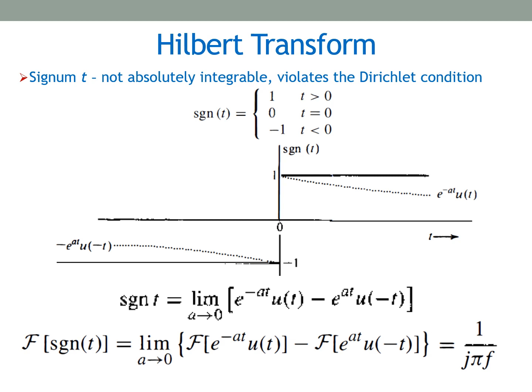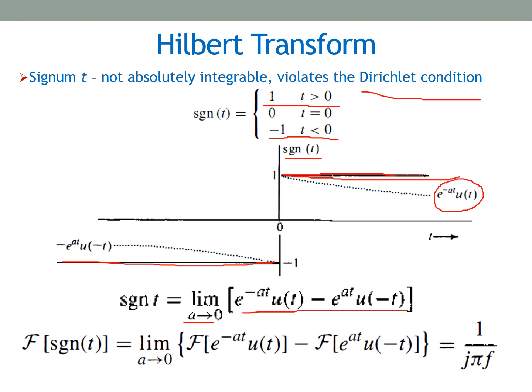The signum function sgn(t) equals +1 for t > 0, −1 for t < 0, and 0 for t = 0. However, sgn(t) does not satisfy the Dirichlet conditions for the Fourier transform, because its integral from minus infinity to infinity gives an infinite value. So instead of using a straight line, we use an exponentially decaying function to represent sgn(t), where the parameter a approaches zero, making it exactly equal to sgn(t).